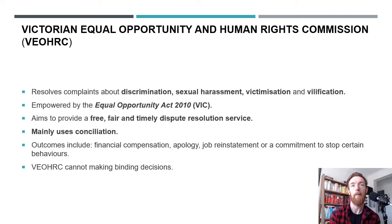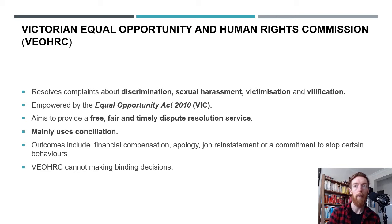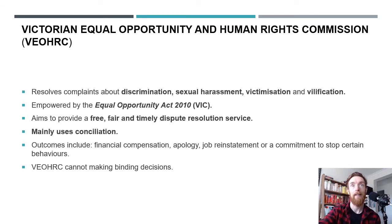Outcomes can include financial compensation, an apology, job reinstatement or a commitment to stop certain behaviours. However, the Victorian Equal Opportunity and Human Rights Commission cannot make binding decisions. For example, if a workplace is treating you differently because of your gender — say they weren't promoting you because you weren't male — they can help reach a solution, like a new position, but both parties must agree to the final decision. You can complain to this body if you're being treated differently based on your race, gender, etc.